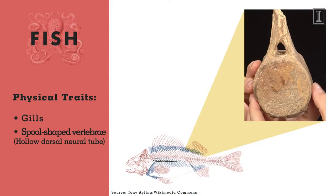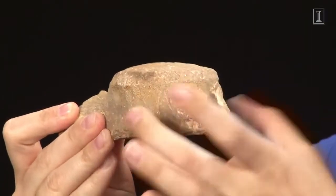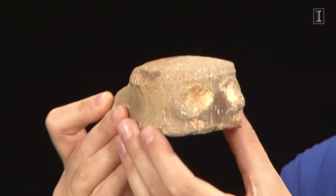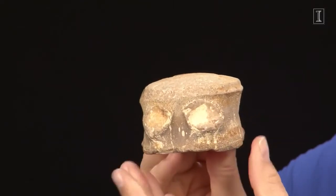Next, fish have vertebrae that are spool shaped. We have a large specimen here, and what we're looking at is this overall circular shape. If I turn it to the side, you can see it pinches in on the sides a little bit — that's where we get the spool shape.